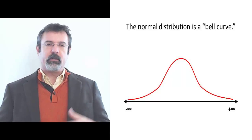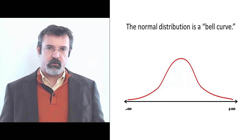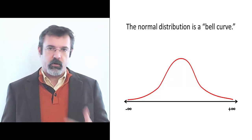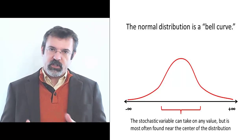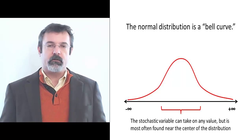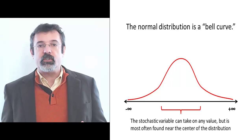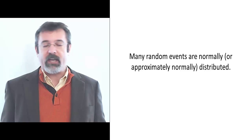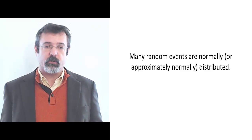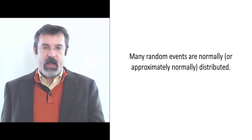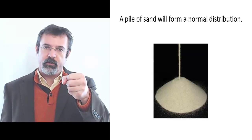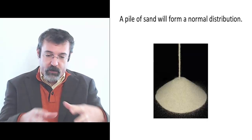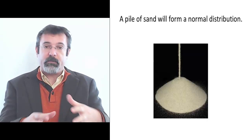A normal distribution is a bell curve that describes the behavior of a particular type of stochastic variable. Normally distributed stochastic variables can take on any value, but are typically found around the center of the distribution. Statisticians make frequent use of the normal distribution because it describes many stochastic processes found in nature. For example, if you grab a pile of dry sand and drop it through your hand, the sand will fall and form a mountain shaped like a normal distribution.